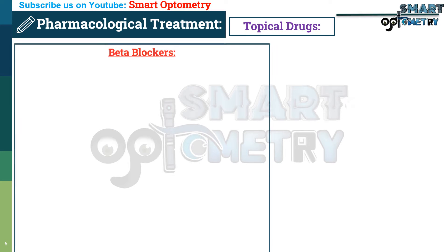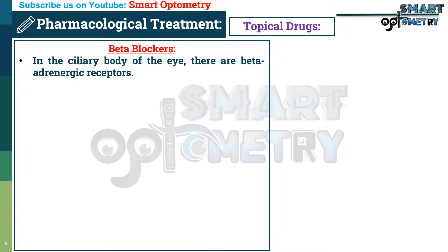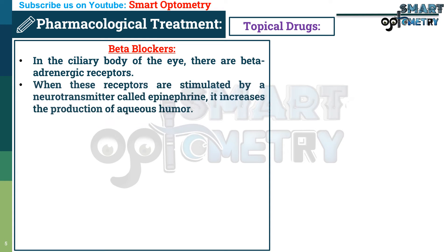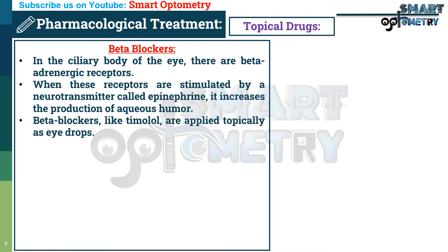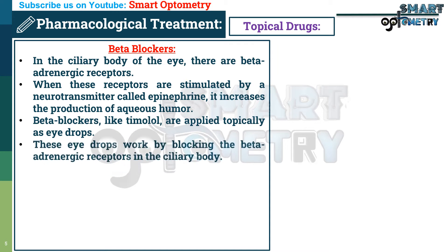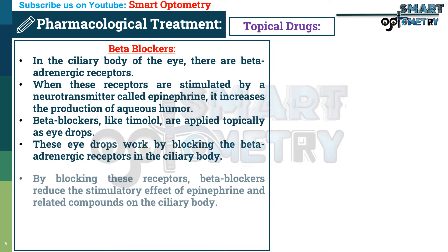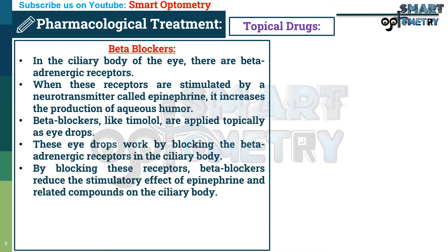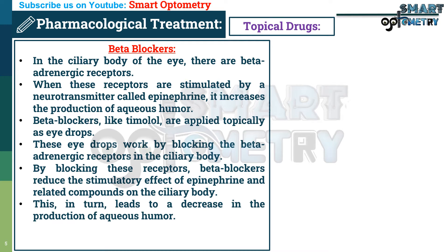In the ciliary body of the eye there are beta adrenergic receptors. When these receptors are stimulated by a neurotransmitter called epinephrine, it increases the production of aqueous humor. Beta blockers like timolol are applied topically as eye drops. These eye drops work by blocking the beta adrenergic receptors in the ciliary body, reducing the stimulatory effect of epinephrine on the ciliary body, which leads to a decrease in production of aqueous humor.